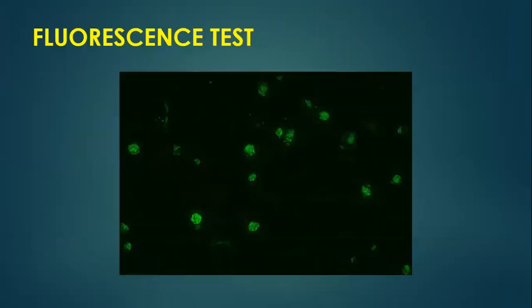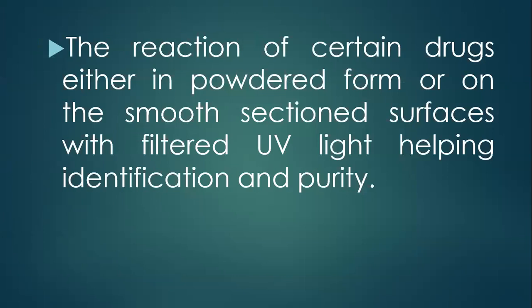Next we are going to discuss about fluorescence analysis. What do you mean by fluorescent analysis? The reaction of certain drugs, either in powdered form or on smooth section surfaces, with filtered UV light helps in identification and purity. This analytical test is used to identify adulterants and to confirm the purity of the powdered drug or section parts of the drug substance with the help of ultraviolet rays.